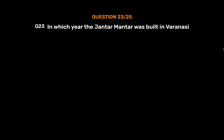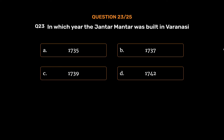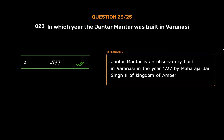Question No. 23: In which year was the Jantar Mantar built in Varanasi? Option A: 1735. Option B: 1737. Option C: 1739. Option D: 1742. The correct answer is Option B: 1737. Jantar Mantar is an observatory built in Varanasi in the year 1737 by Maharaja Jai Singh II of the Kingdom of Amber.